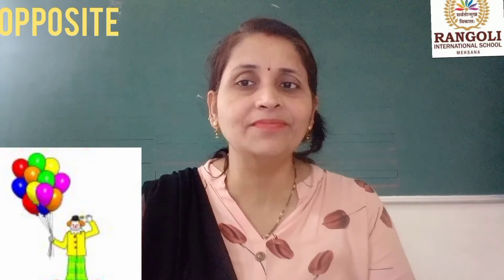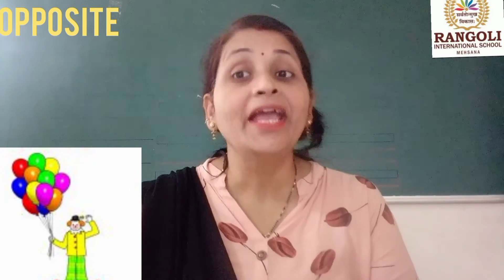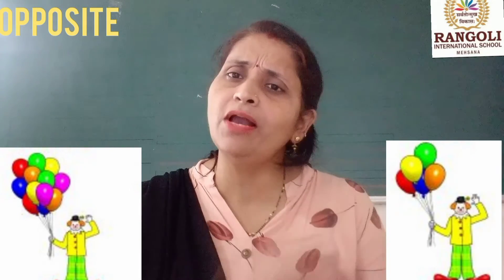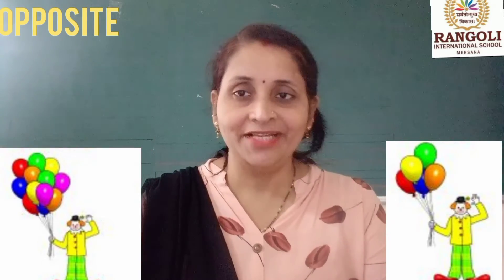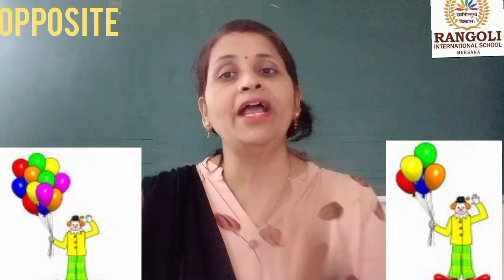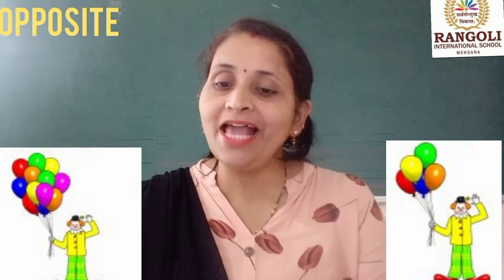Look at here — what is this? Balloons. Count it everyone. How many balloons? Eleven balloons. And here how many balloons? Only five balloons. So eleven is more and five is less.